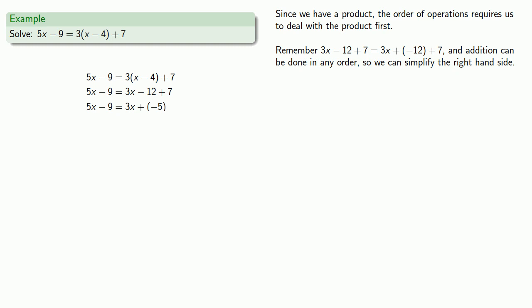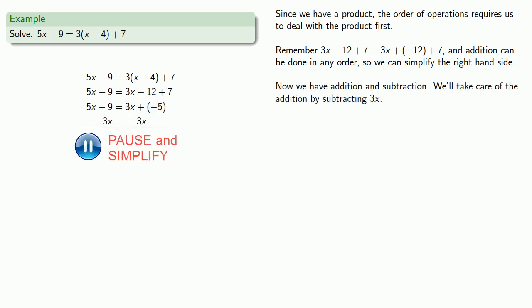Now I have an addition and a subtraction. Since I eventually want to get this equation into the form x equals stuff, what I need to do is I need to get rid of the x terms on one side. Well notice over on the right-hand side, I'm adding 3x so I can undo that by subtracting 3x. And so now I have 2x minus 9 equals additive inverse of 5.